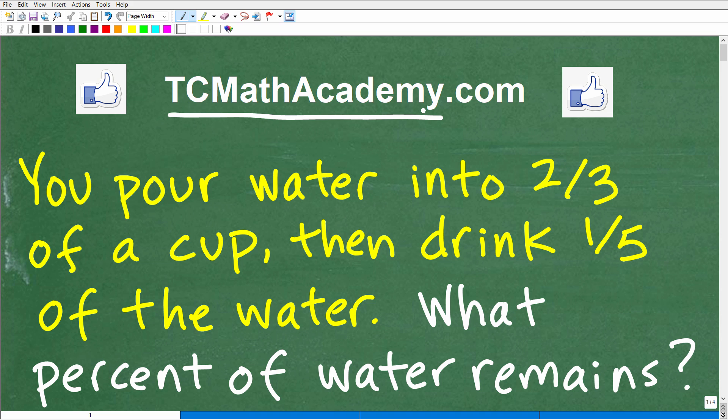Now, I do post a lot of content, but this particular problem has gotten a lot of feedback. A lot of people are confused about the solution and the problem. The problem is you pour water into 2/3 of a cup, then drink 1/5 of the water. What percent of the water remains?